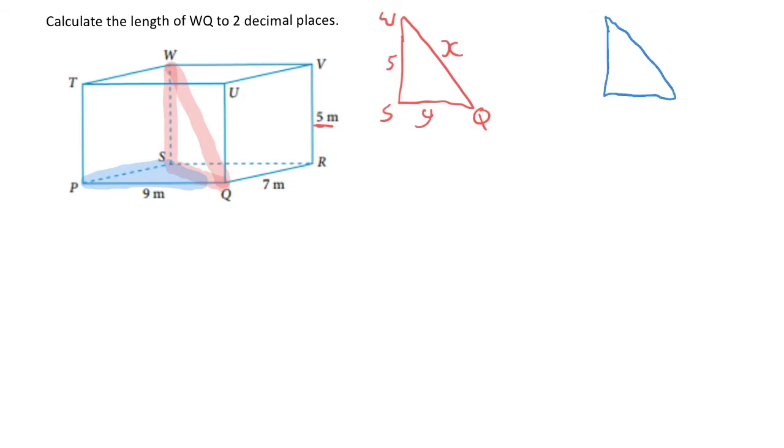And it's going to be S, P, and Q. Now, SQ has already been named Y, so I'm going to keep calling it Y. And then SP forms one of the sides of the rectangular prism, so I know that is going to be 7. And then PQ, I know is 9.